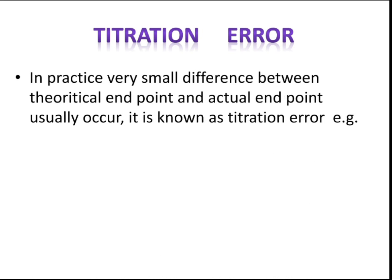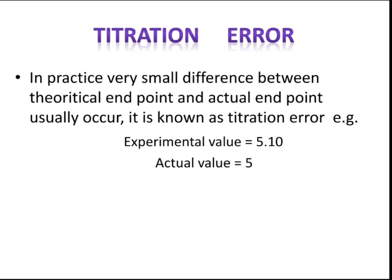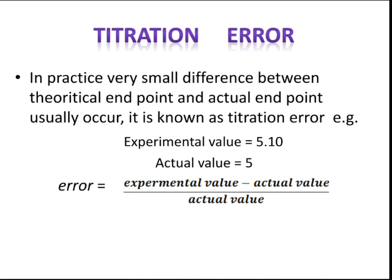Titration error: in practice, a very small difference between the theoretical endpoint and the actual endpoint usually occurs, and this is known as titration error. For example, if the experimental value is 5.10 and the actual value is 5, then error equals experimental value minus actual value divided by actual value.